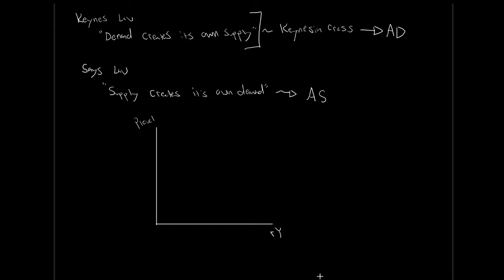Using the same axes we were looking at earlier - price level versus real output - we're going to draw our aggregate supply curve. It's going to start flat, slowly increase, and then get very steep, approaching vertical. This is our aggregate supply curve.